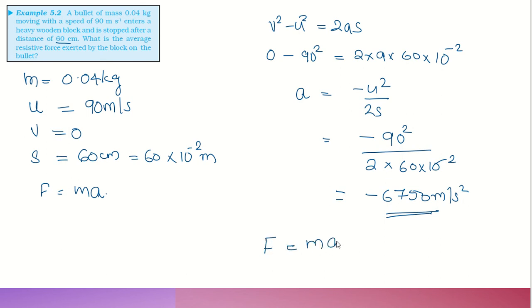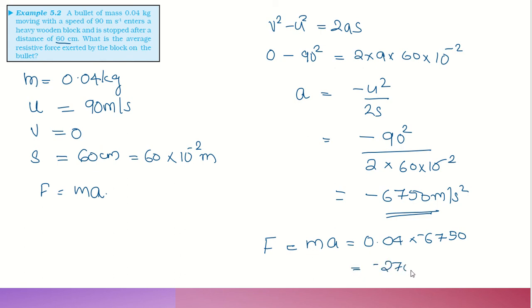Now using F equals ma: mass is 0.04 kg and acceleration is minus 6,750 m/s². Therefore the force is minus 270 Newton. The negative sign indicates the resistive force acts opposite to the direction of motion.